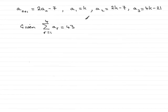Now in this part of the question we've got to find out what the value of k is given that the sum of the first four terms of the sequence comes to 43.